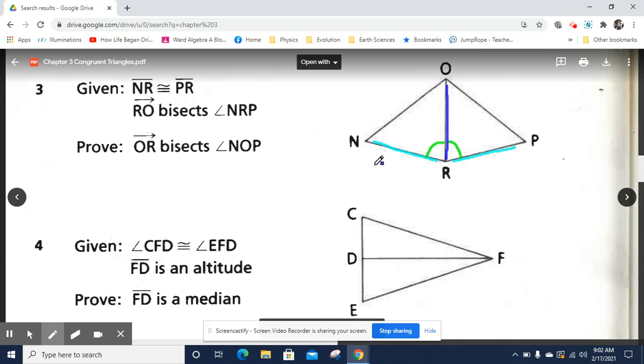Once you have that information, you have enough information to prove that triangle NRO and PRO are congruent. And if you can prove those are congruent, then you can prove all the corresponding parts of those triangles are congruent.